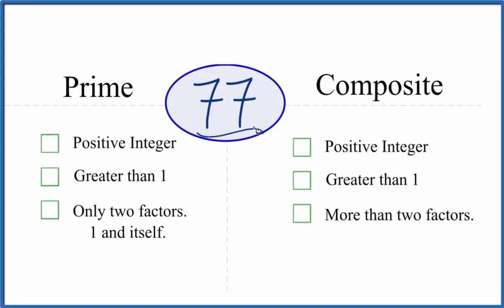If you're asked whether 77 is prime or composite, here's how you can tell. First, let's see whether 77 is a prime number. Is it a positive integer? Yes, it's positive and a whole number. Is 77 greater than 1? Yes.